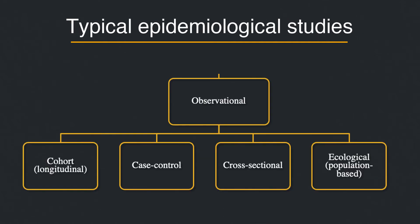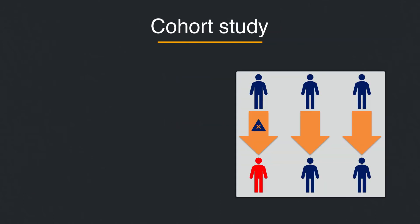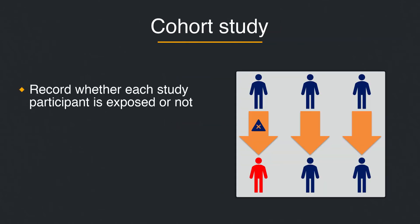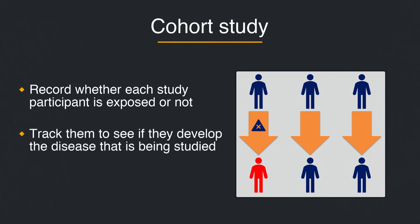Here are some research designs for observational research studies. In a cohort study, the researchers record whether each study participant is exposed or not, and then track them to see if they develop the disease that is being studied. The participants are enrolled at the beginning of the study and are followed over time to see if the disease develops, or after both the exposure and the outcomes have occurred.